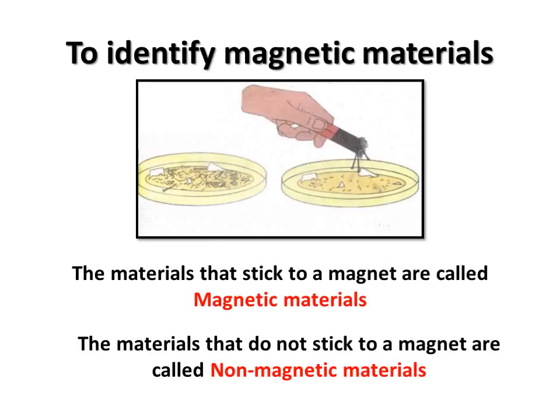Let us try this simple experiment to identify magnetic materials. Take a mixture of sand, pieces of paper, sawdust, iron filings and pins in a saucer and pass a magnet round the mixture. What do you see? Sand, pieces of paper, sawdust — they do not stick to the magnet.